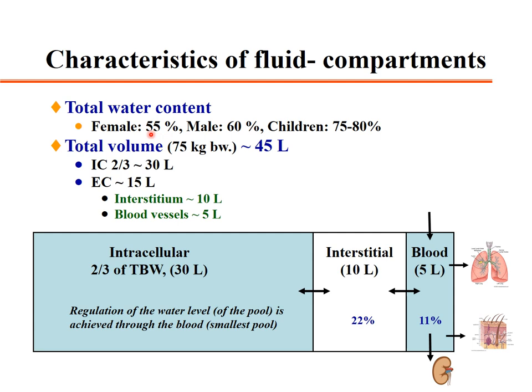The water content of the body is usually proportional to body weight and depends on gender. An adult female has about 55% total body water volume, while a male has about 60%. In children, relatively, we do have more water compared to lipids.